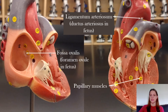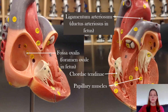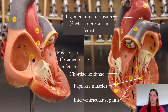In the ventricles you can see little nubs called papillary muscles, which are attached to part of the valves called the chordae tendinae. The chordae tendinae is part of the bicuspid valve or tricuspid valve depending on which side. We also have the interventricular septum, which is the wall between the left and right ventricle.